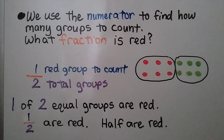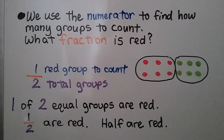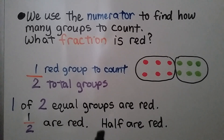We use the numerator to find how many groups to count. So, what fraction is red? One of the two groups — one red group to count out of two total groups. One of two equal groups are red, so half are red. We can read it as half are red.